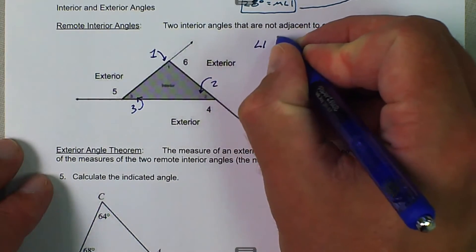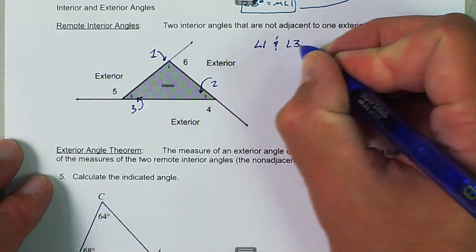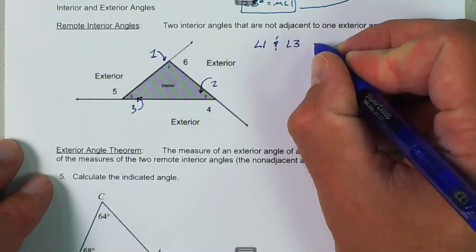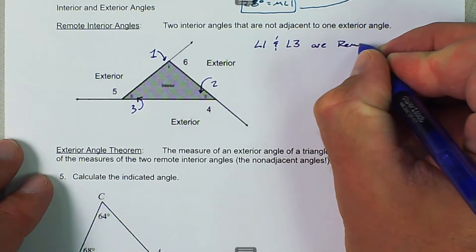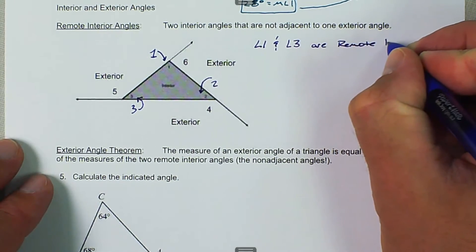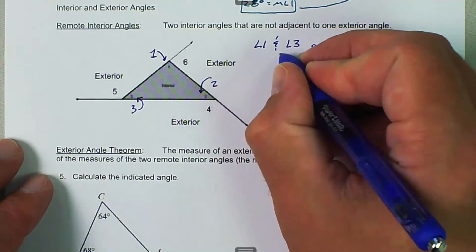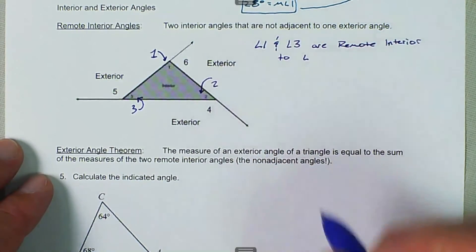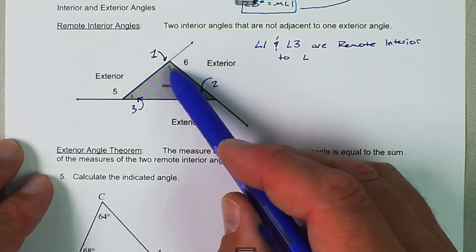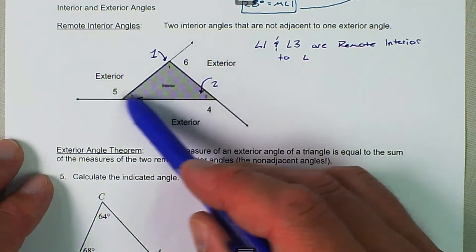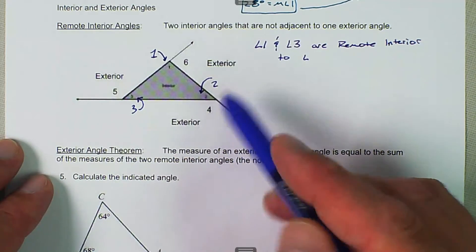Angle 1 and angle 3 are remote interior to angle 4. Usually 1 is adjacent to 6, and 3 is adjacent to 5, so the only other exterior angle is angle 4.